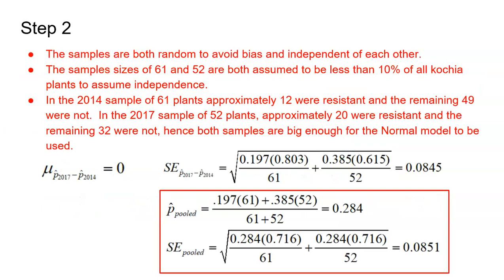Now step two is building that sampling distribution. I have to check my conditions. Both samples are random to avoid bias, and they're independent samples. That is super important, especially when you're working with two samples. The sample sizes of 61 and 52 are both assumed to be less than 10% of all Kochia plants to assume independence. I'm assuming there's lots of them.